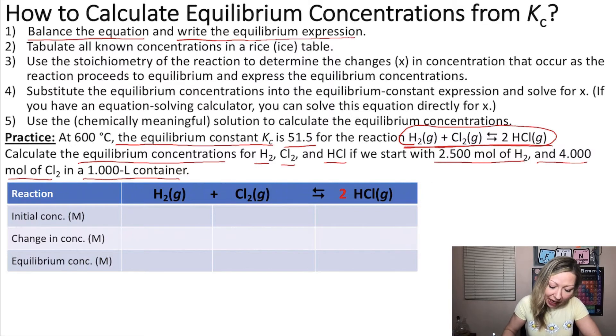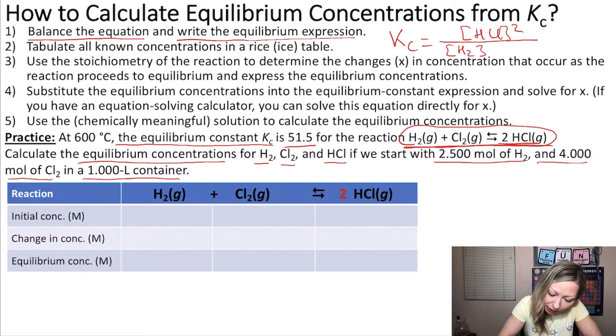Now we need to write out the equilibrium expression. So Kc equals, we first look at the product, right? So the concentration of HCl squared divided by the concentration of H2 multiplied by the concentration of Cl2.